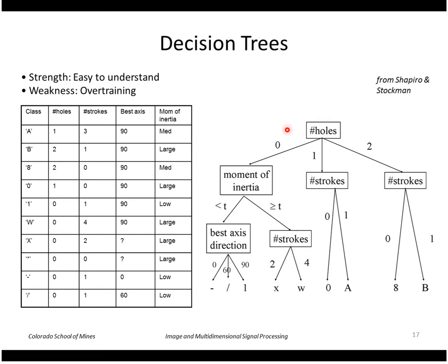First we count the number of holes. If there are zero holes we go this way, if it's one or two we go this way. So let's say there's one hole. Next we look at the number of strokes, and if there's no strokes—I assume this would be linear strokes—we go and decide that is the character zero. Otherwise it's the character a.